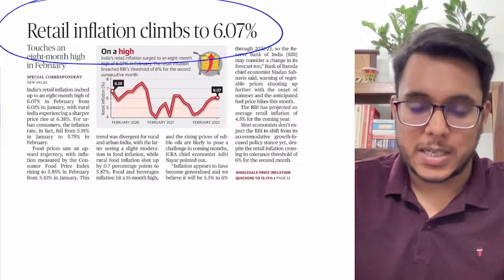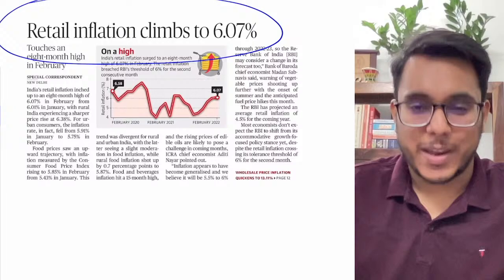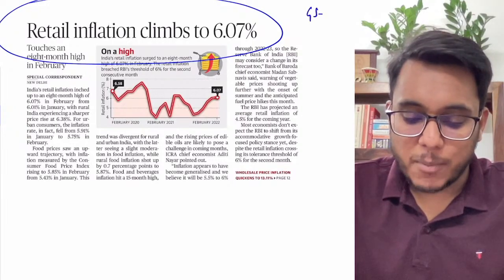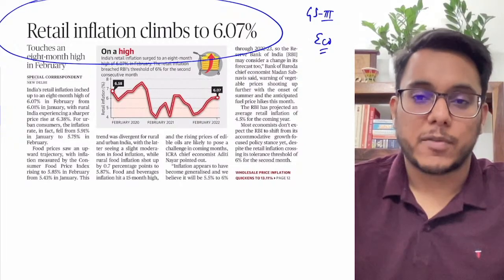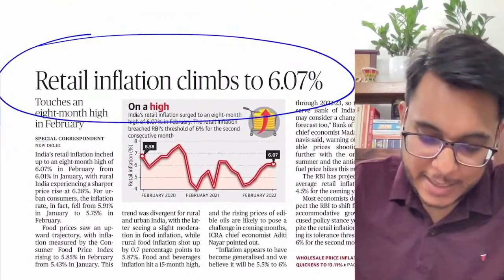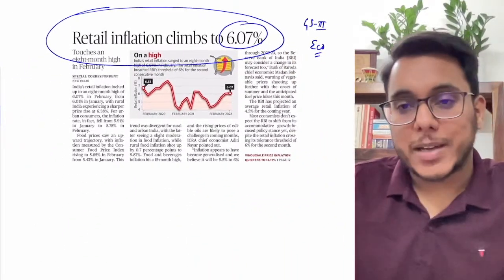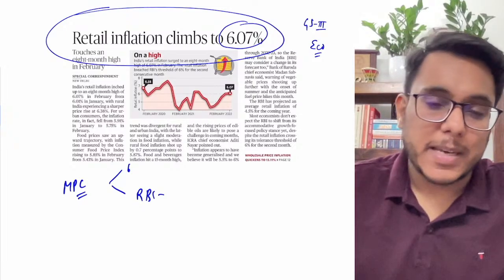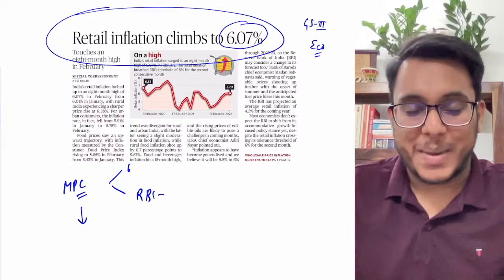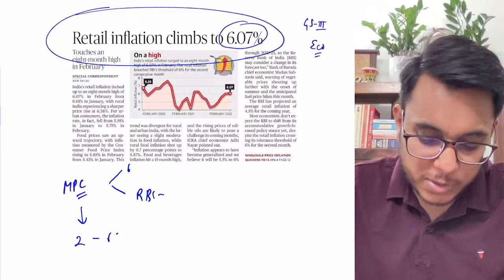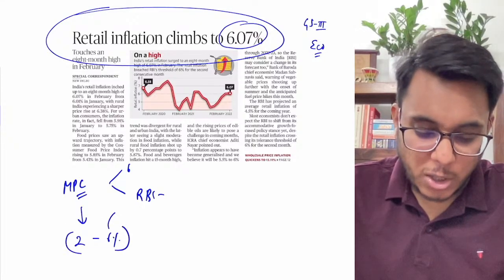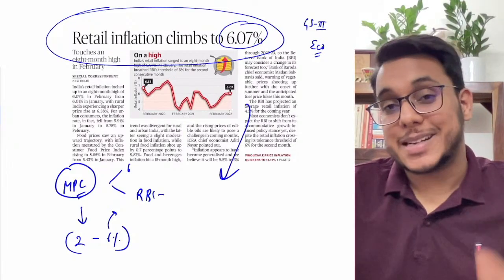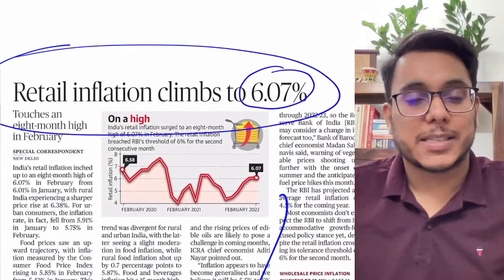Retail inflation climbs to 6.07 percent — you don't need to go into detail on every month's inflation data, but the trend is very important for GS Paper 3. The Monetary Policy Committee has six members with the RBI as its chief, and it has been given a mandate to keep inflation in India between the band of two to six percent. It should not go beyond six percent — and now it has reached 6.07 percent.